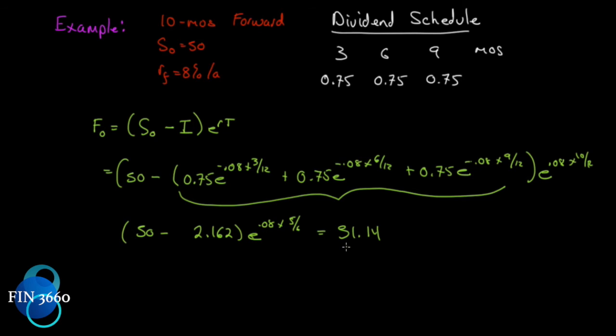Now before we move on, I want to say something: this price, F₀, has nothing to do with what the market thinks this stock will be worth in 10 months. Some students get confused with the futures price, saying 'Oh, so the market thinks this will only be $51.14 in the future.' No, that is not what it's saying at all. A futures price is a function of the spot price, the risk-free rate, and the time to maturity.